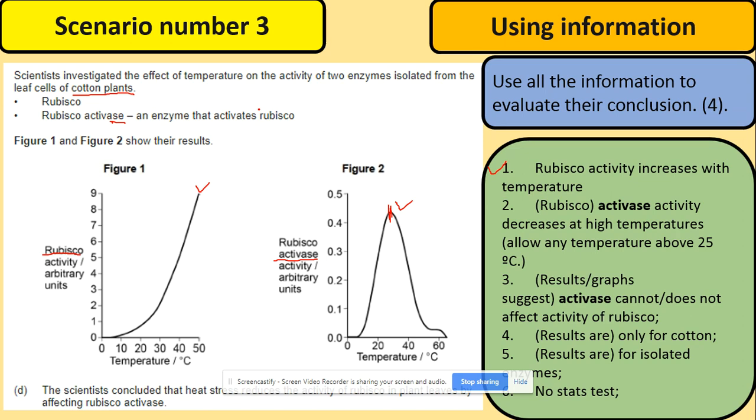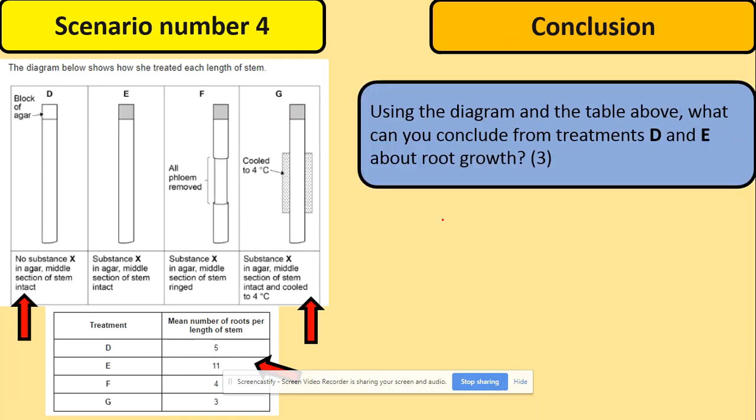It's only for the isolated enzymes, two of those here. And there is no statistics tests. So the first three marking points you can get by analyzing the graphs. Please do so. You can afford a minute looking at the information because that will bring your answers.